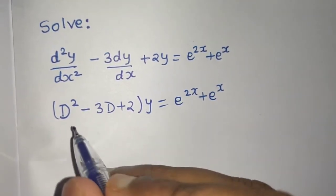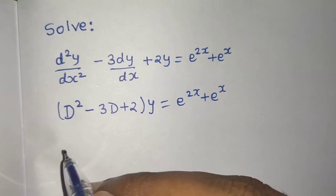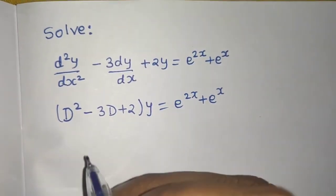Now convert it from D form to m form so that we can get the auxiliary equation.